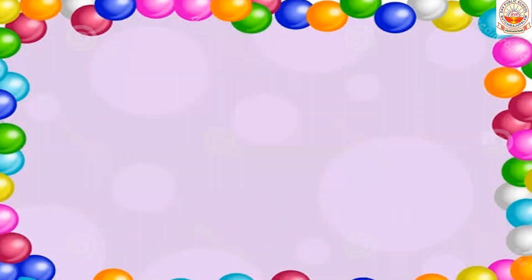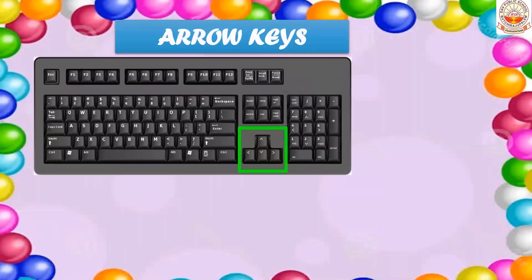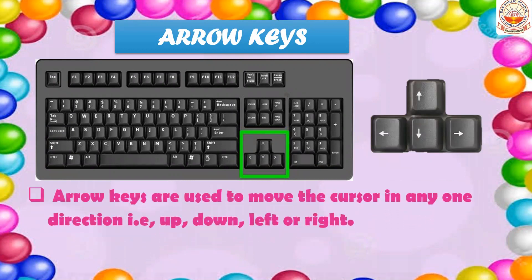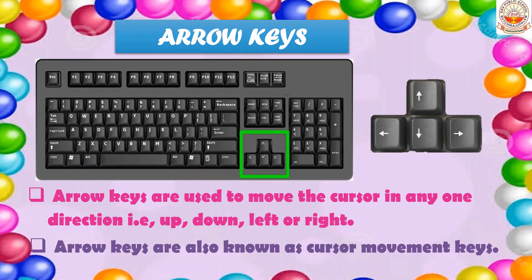The next special key is the arrow keys. There are four arrow keys and they are used to move the cursor on the screen. That is why they are known as cursor movement keys. The four arrow keys are: up arrow, down arrow, left arrow, and right arrow.